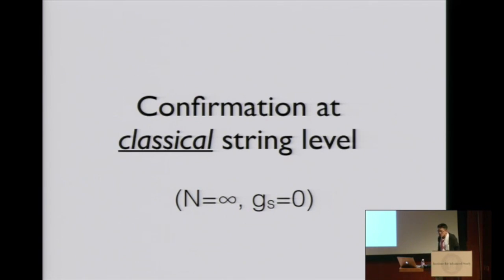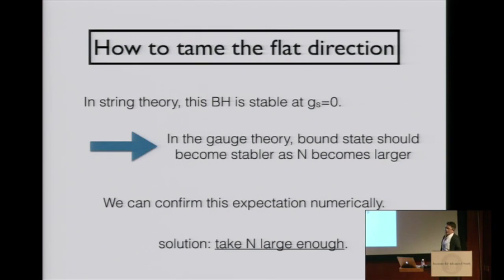Let us start with the confirmation of gauge-gravity duality at classical string level. In this case, it's easy to tame the flat direction. In string theory, this black hole is stable if we ignore GS correction. In the gauge theory side, corresponding statement should be that bound state of eigenvalues should become more and more stable as n becomes larger. And actually, we can confirm it numerically.